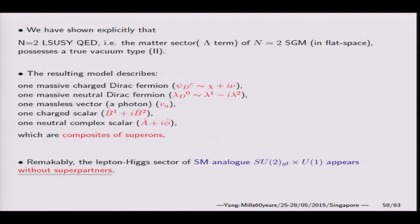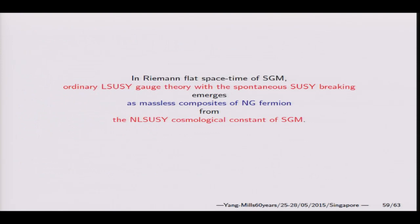We have very interesting results. Our N equals 2 has only described one massive charged Dirac fermion, one massive vector photon, one charged scalar, one neutral complex scalar. These are exactly the lepton sector of the standard model. Of course, at this stage SU(2) is still global. This is the summary: in D-manifold flat space-time SGM, ordinary linear SUSY gauge theory with spontaneous SUSY breaking emerged as a massless composite of Nambu-Goldstone fermion from the non-linear SUSY cosmological term of SGM or NLSUSY GR.